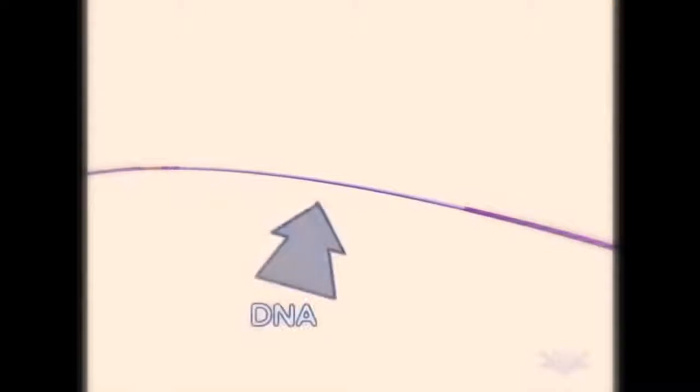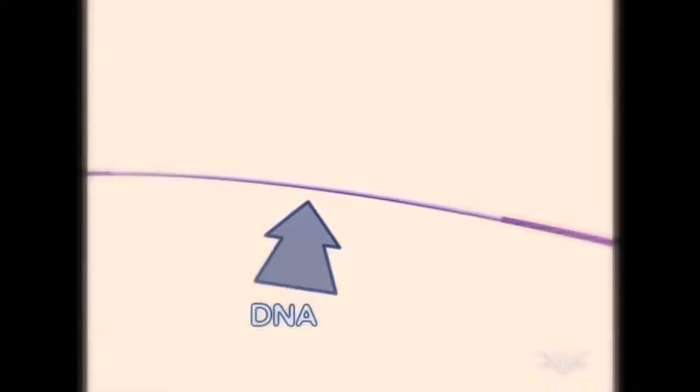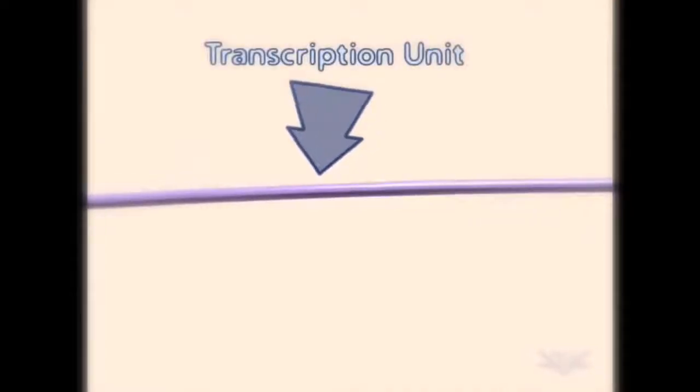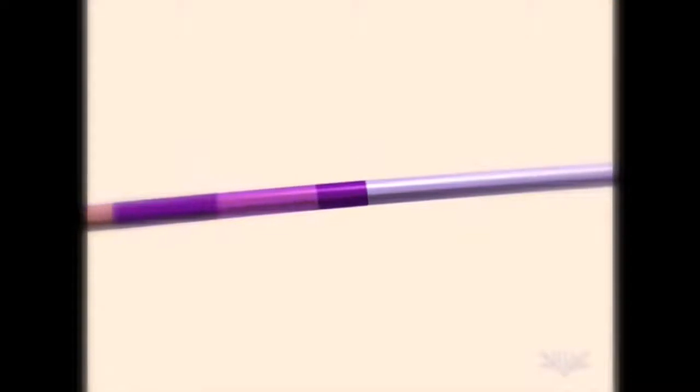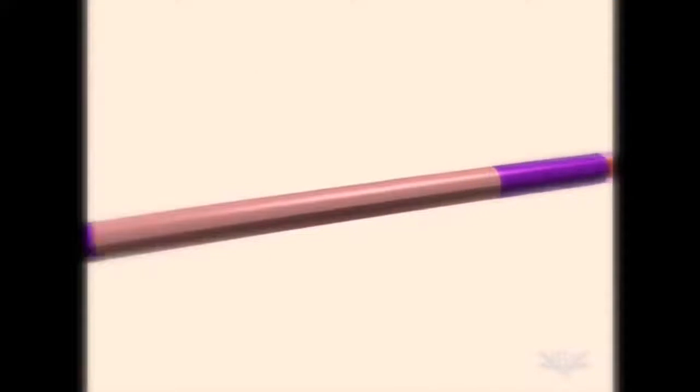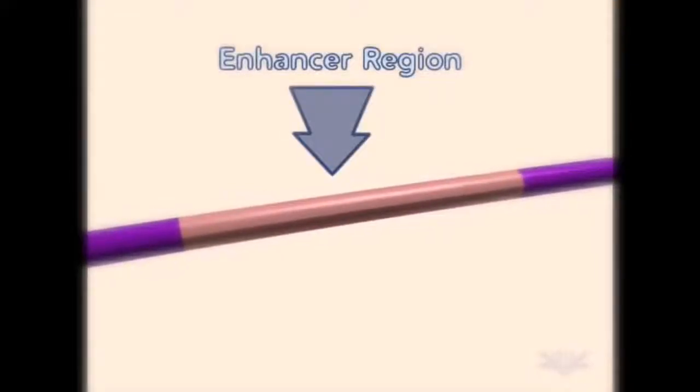Transcription begins with a strand of DNA. It is divided into several important regions. The largest of these is the transcription unit. This portion of the DNA will be used to produce RNA. Upstream of the transcription unit is the TATA box. An enhancer region may also be involved.